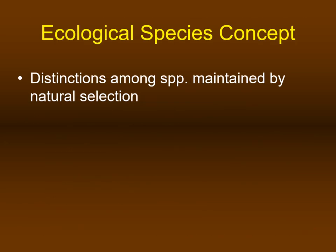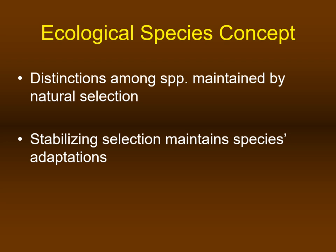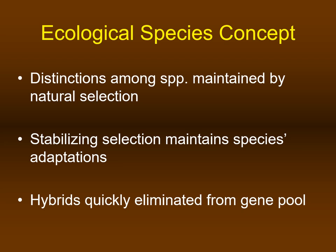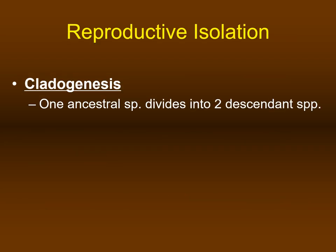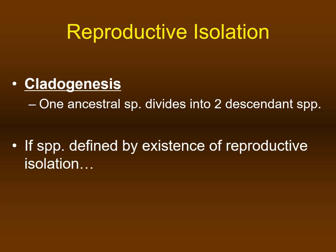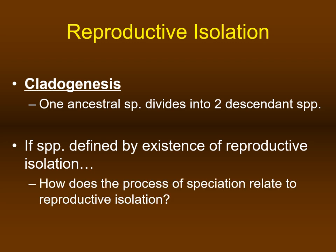The biological species concept has been criticized because reproductive isolation may not be the only force maintaining species integrity. Up to 50% of California plants cannot be defined by genetic isolation, and 10% of all bird species in the world can hybridize in nature. Additionally, the concept cannot be applied to asexually reproducing species such as bacteria. An alternative is the ecological species concept, where distinctions between species are maintained by natural selection — stabilizing selection maintains adaptation to certain environments, and hybrids differing phenotypically from the original species are rapidly eliminated from the gene pool.